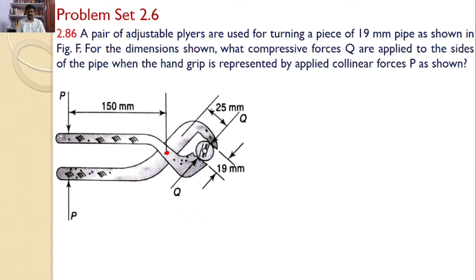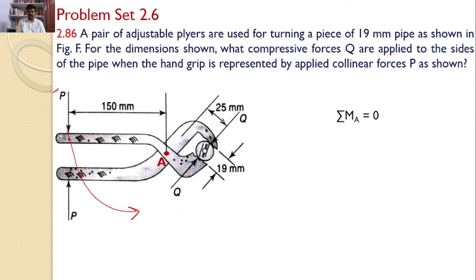This distance is given as 25 mm, this diameter is 19 mm, and this distance is 150 mm. Let this fixed point be named A. If I take the moments about this point A, P will create a moment in this direction and Q will create a moment in this direction. P is at a distance of 150 mm and the perpendicular distance for Q is 25 mm.